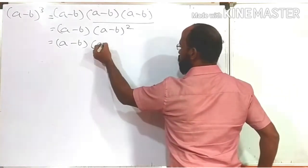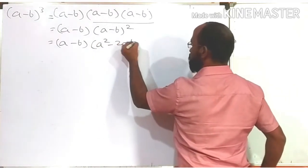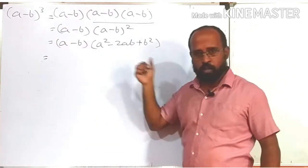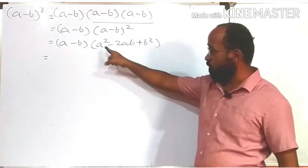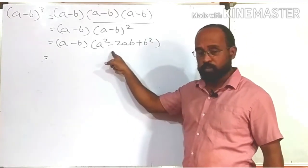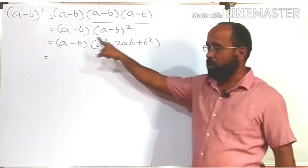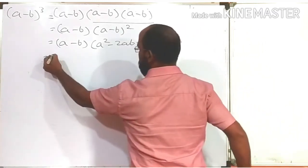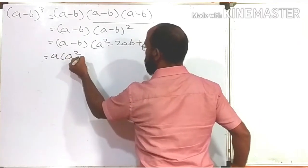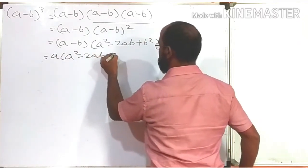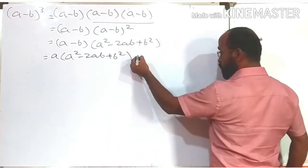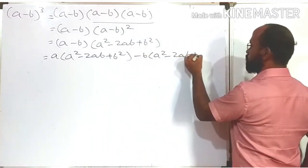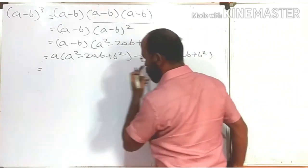So (a - b)³ equals (a - b) multiplied by (a - b)², and we already know the formula for (a - b)², which is a² - 2ab + b². So we have (a - b) multiplied by (a² - 2ab + b²). Now we have to multiply each and every term in the second bracket by each and every term in the first bracket.